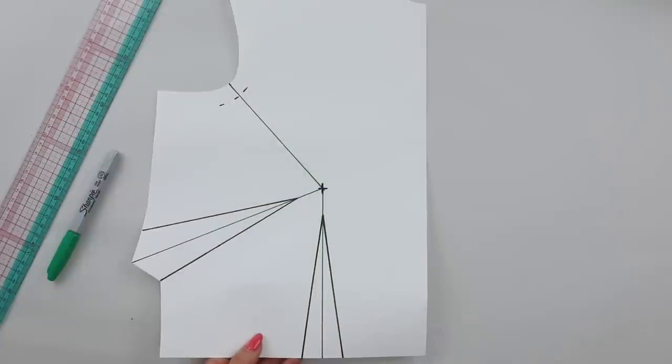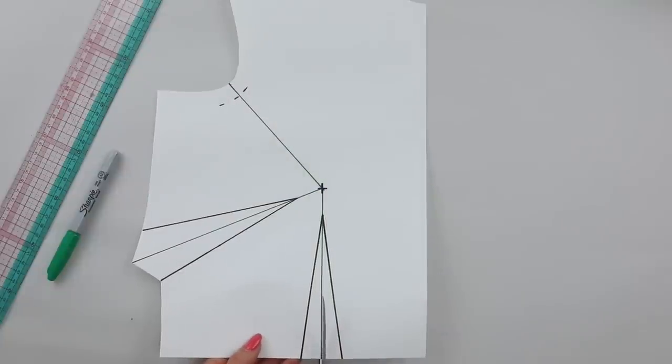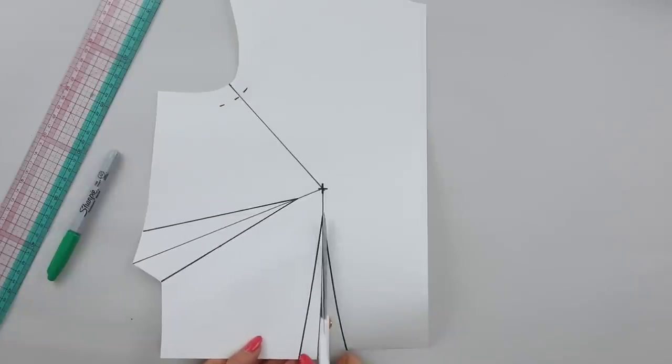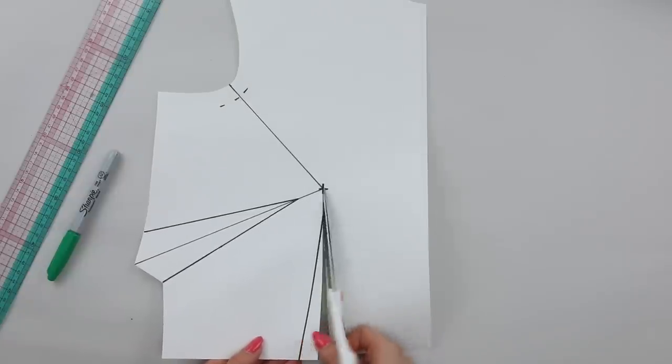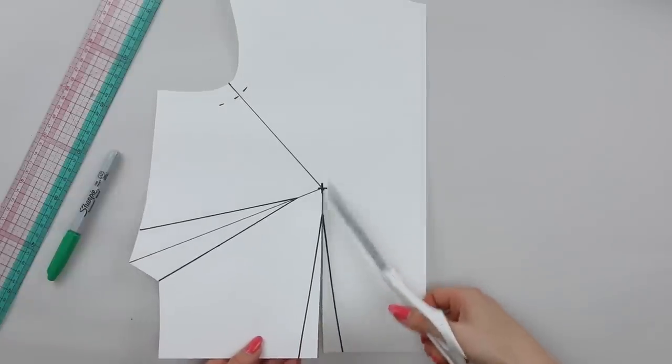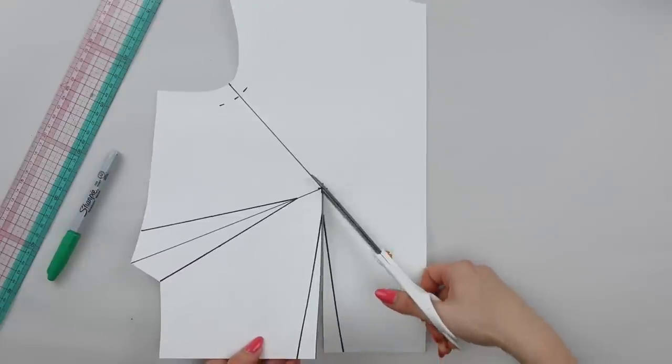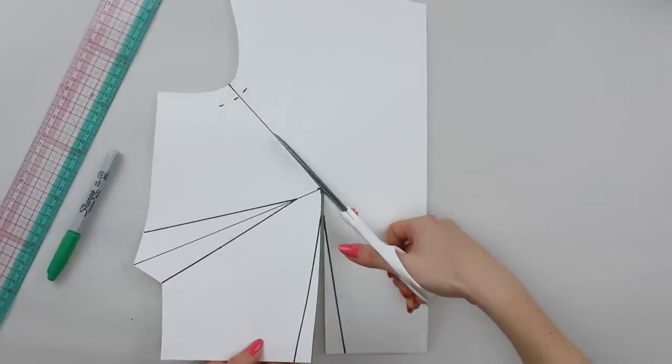Then you can grab a pair of scissors and you're going to cut up the bottom from the waist up to the bust point, through the bust point or bust apex and towards the armhole. You're going to stop at the stitching line.